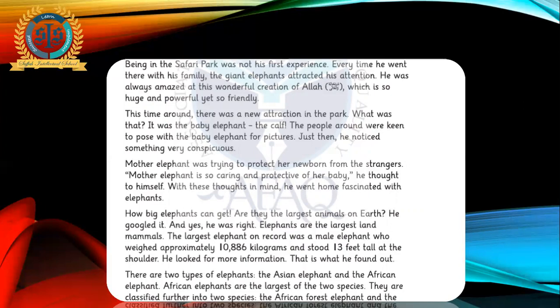A small baby elephant is called a calf. So the calf was there and everybody was taking pictures with the calf. Then he explains the fascination of the boy — how fascinated he is because the mother elephant was so protective about her baby. Then he talks about the largest animals on earth. He actually goes to Google the elephants, and found out weights of 10,886 kilograms and 13 feet tall for the biggest elephants. Then in the next paragraph, he tells about the types of elephants: Asian and African.